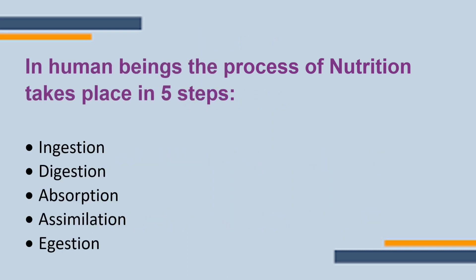Students, we know that nutrition in human beings takes place in 5 steps. The first step is ingestion — the taking in of food particles. After that, the second step is digestion, which means the conversion of complex particles into their simpler form.